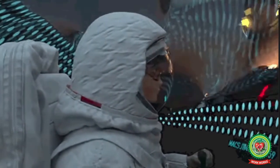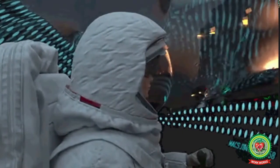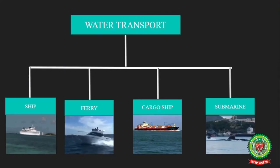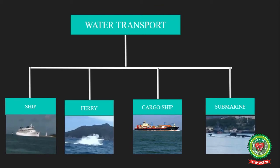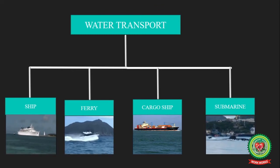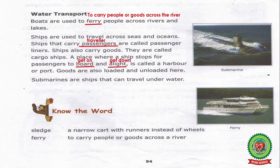Now the next topic is water transport. What do you mean by water transport? Transport that sails on water is called water transport. Boats are used to ferry people across rivers and lakes. Underline the word 'ferry' and write down the meaning: to carry people or goods across the river.